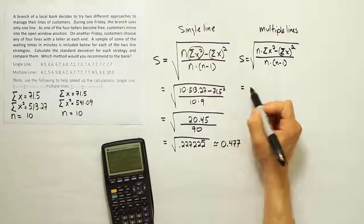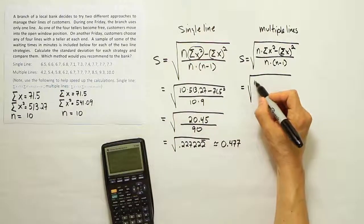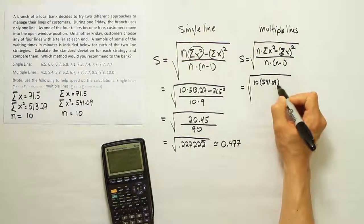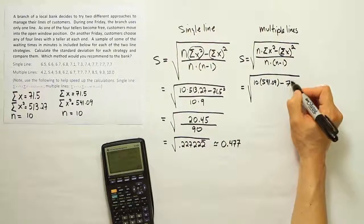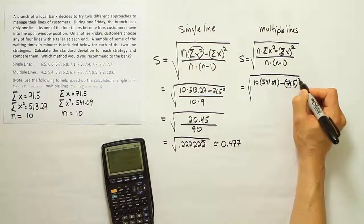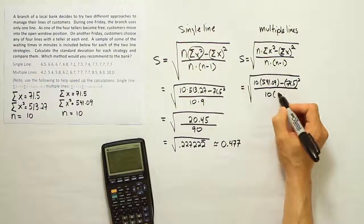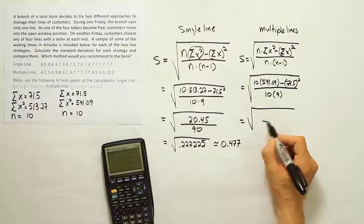And when we plug in the information for the second group of data, it's going to be 10 times 541.09 minus 71.5 squared over 10 times 9. Okay, so once again, the bottom is 90.